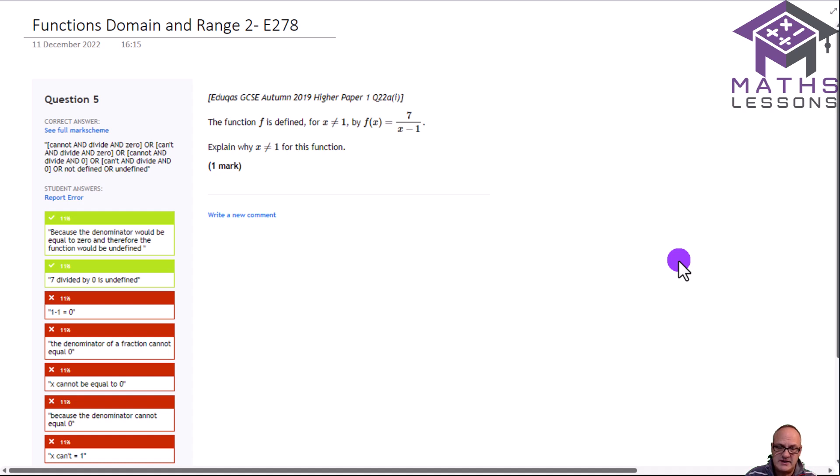Going on to the next one, it's exactly the same sort of question, except it says explain why x cannot equal 1 for this function. If you look at the bottom, the denominator, you've got x minus 1 there. We know that x minus 1 cannot equal 0, so therefore x cannot equal positive 1. Looking at the answers that were accepted, because the denominator would equal 0 and therefore the function to be defined is nice, 7 divided by 0 is undefined.